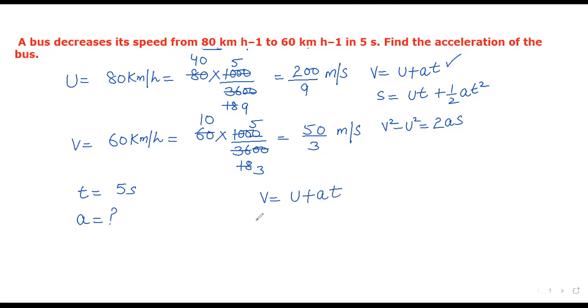The formula is V = U + at. Substituting values: V = 50/3, U = 200/9, t = 5. So 50/3 = 200/9 + 5a. Rearranging, 50/3 - 200/9 = 5a.